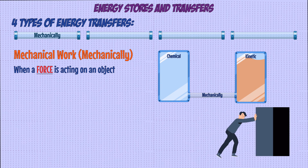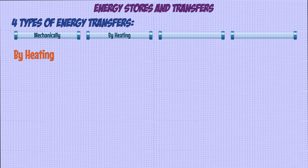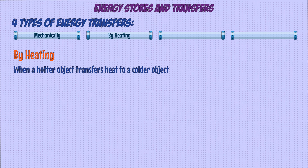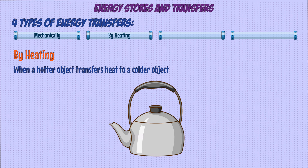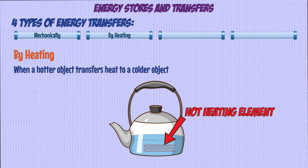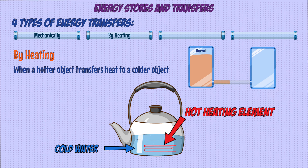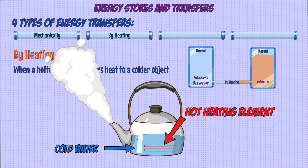The next type is transfer by heating, which involves energy being transferred from a hotter object to a colder one. For example, when a kettle heats up water, the heating element is hot and the water is cold at the start. Energy is transferred from the thermal energy store of the heating element by heating to the thermal energy store of the water, causing it to get hotter.